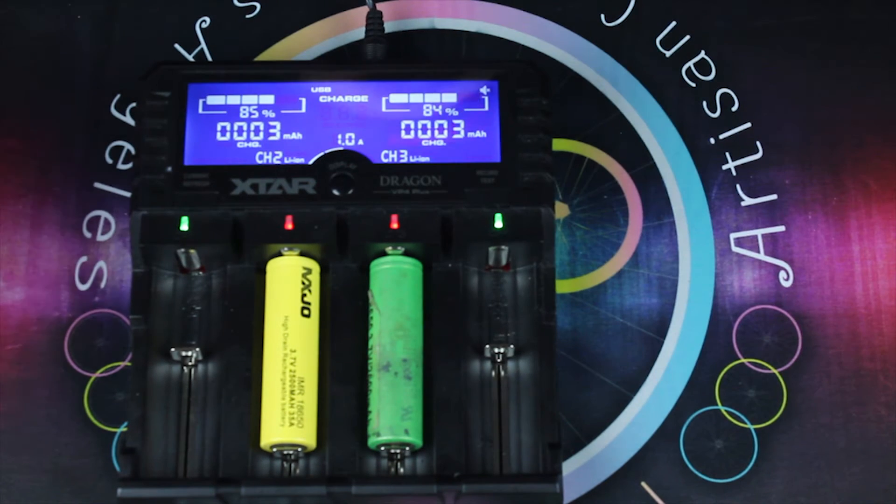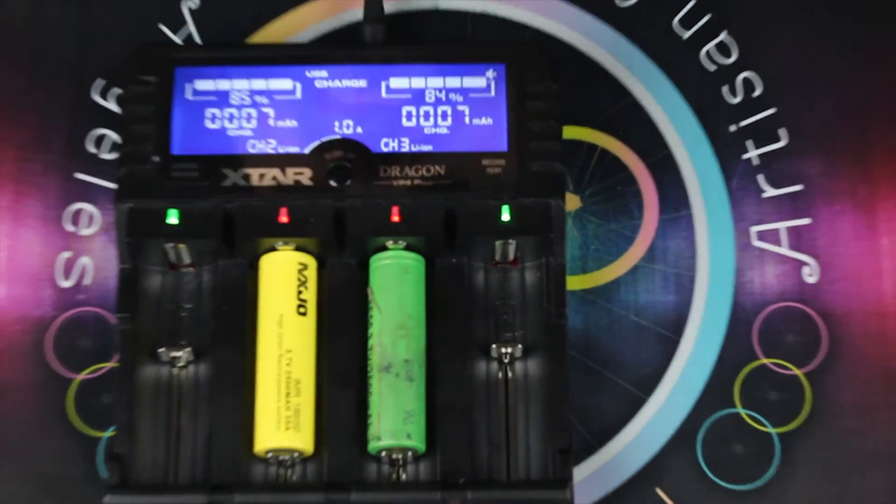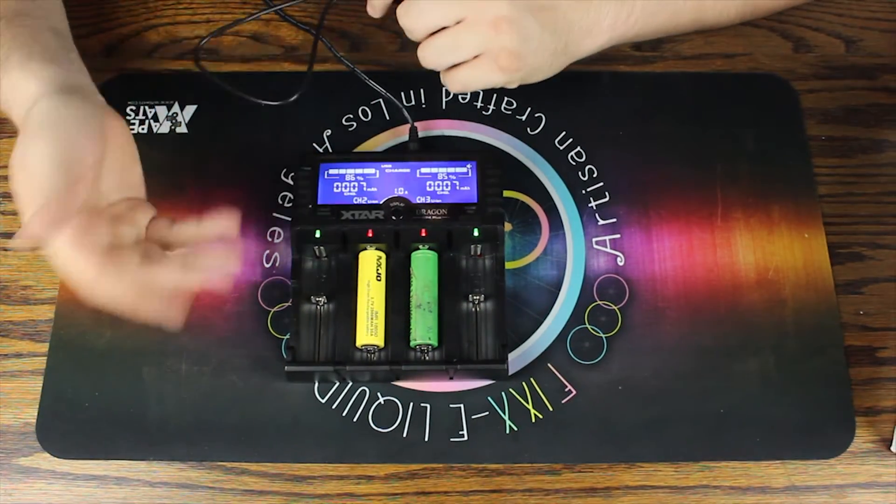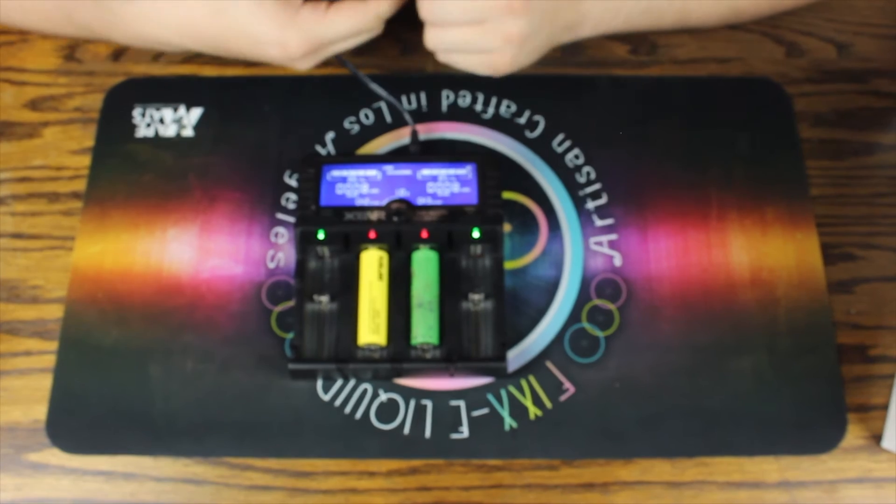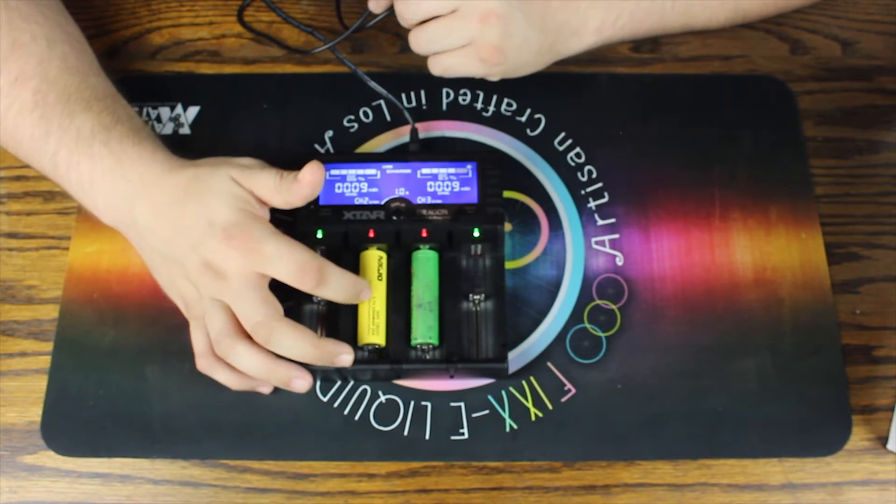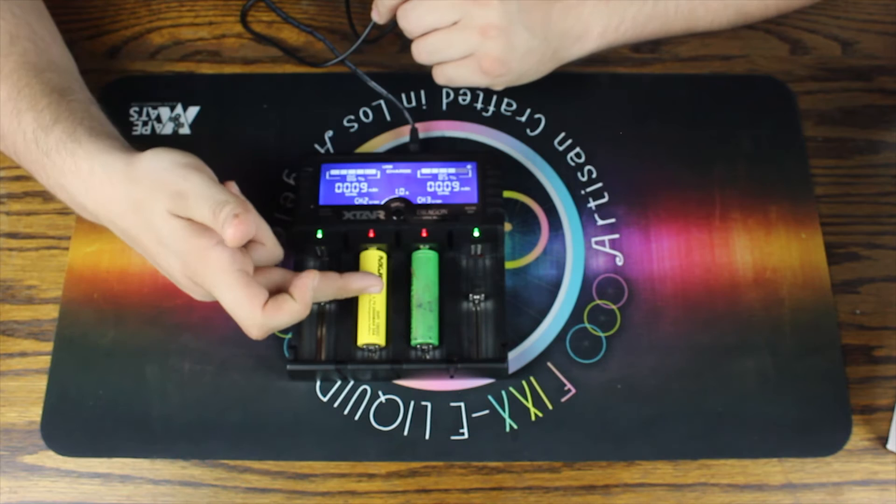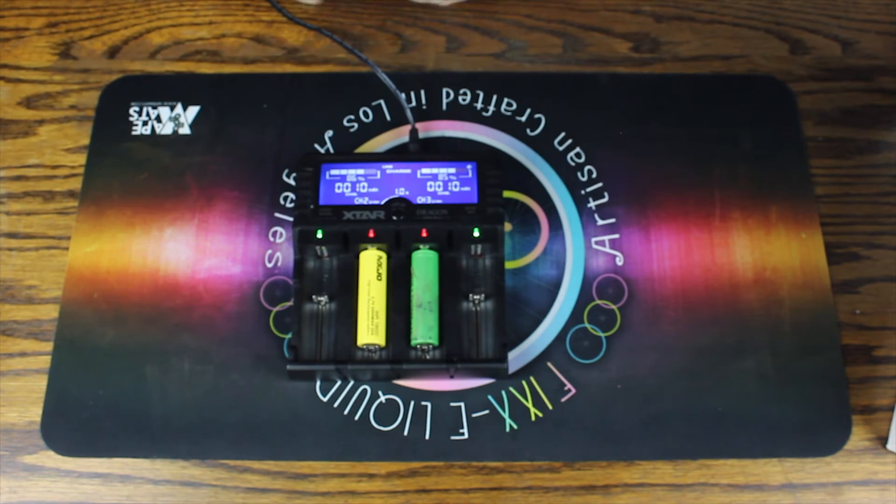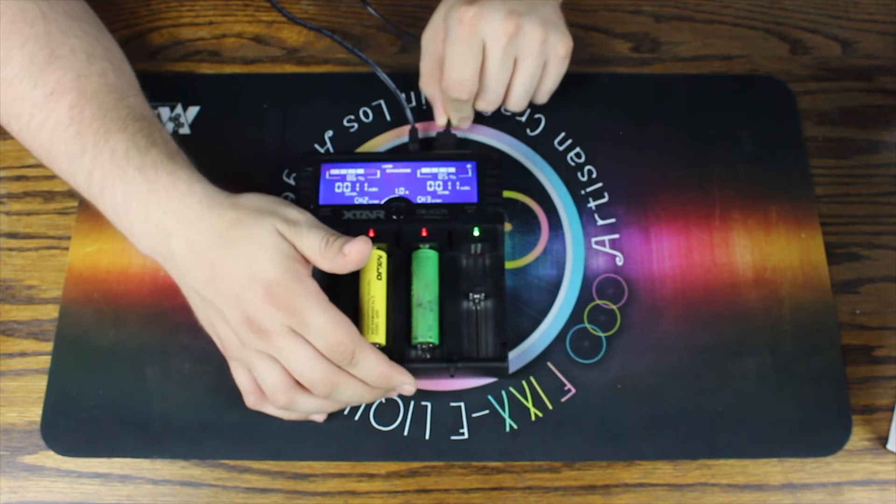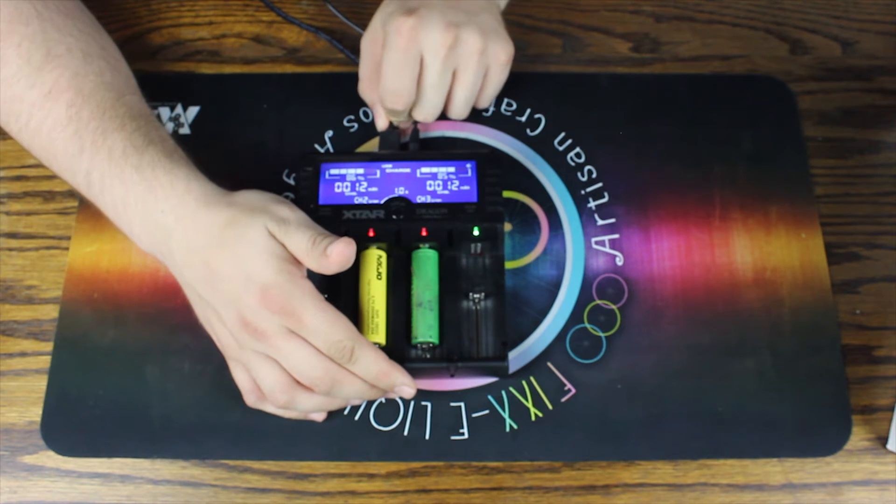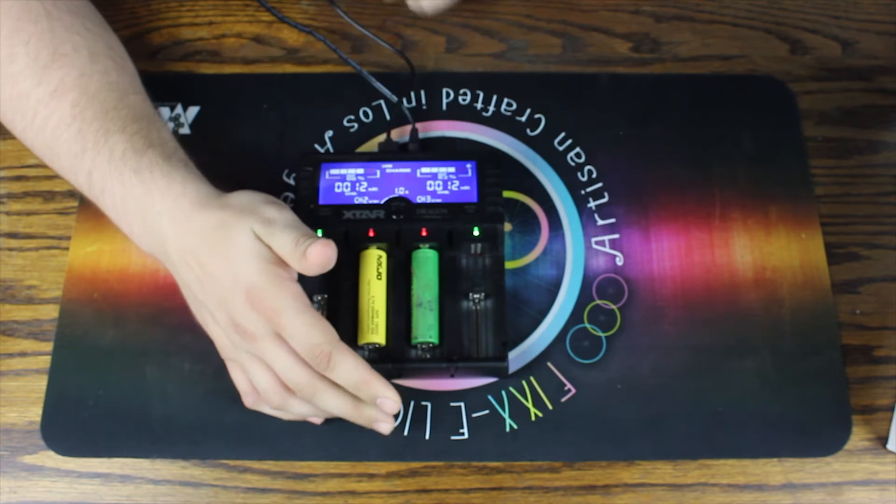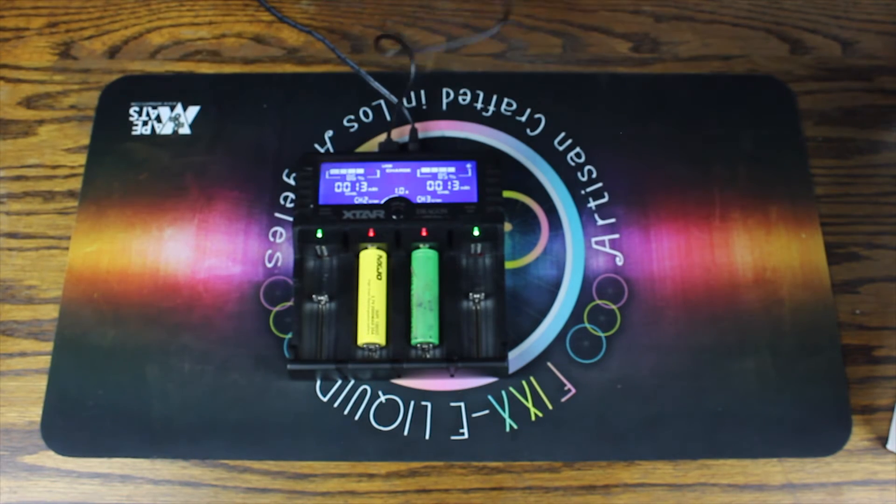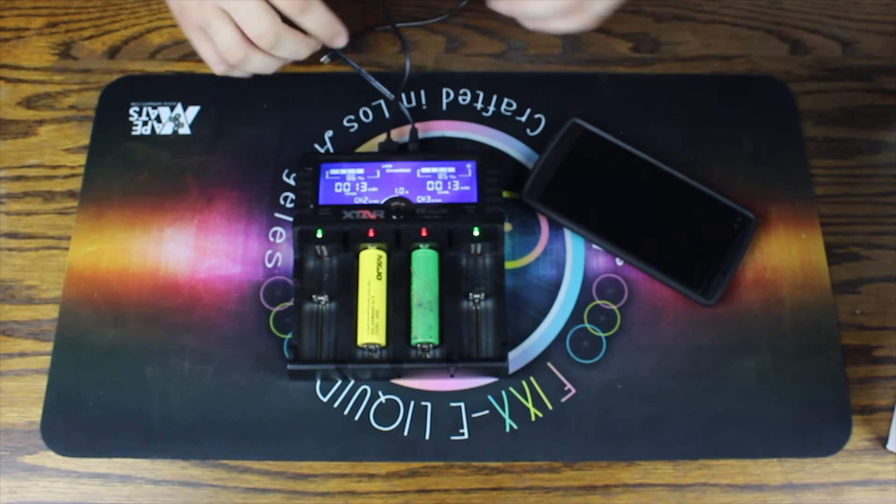One of the core things that I want to talk about that this charger actually does is something that I'm not used to a charger doing. A lot of chargers can do a USB charge, but what a lot of them do is they actually charge based off the batteries here. So you throw charged batteries on here and it uses these batteries to charge out of the USB slot. That's garbage. I want to use these batteries for vaping, I don't want to use them for charging my phone. I want to use the charger for that, it's a charger.